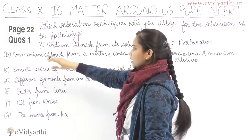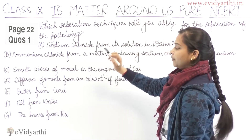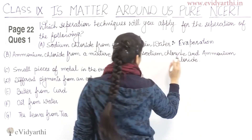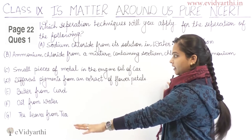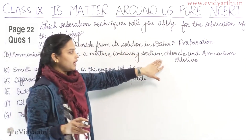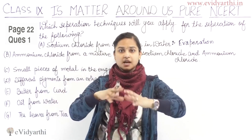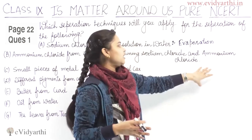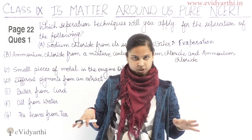Now coming to the second part: Ammonium chloride from a mixture containing sodium chloride and ammonium chloride. We have to separate ammonium chloride from a mixture which contains sodium chloride and ammonium chloride. So sodium chloride and ammonium chloride are mixed and we have to separate them. The process used is sublimation.